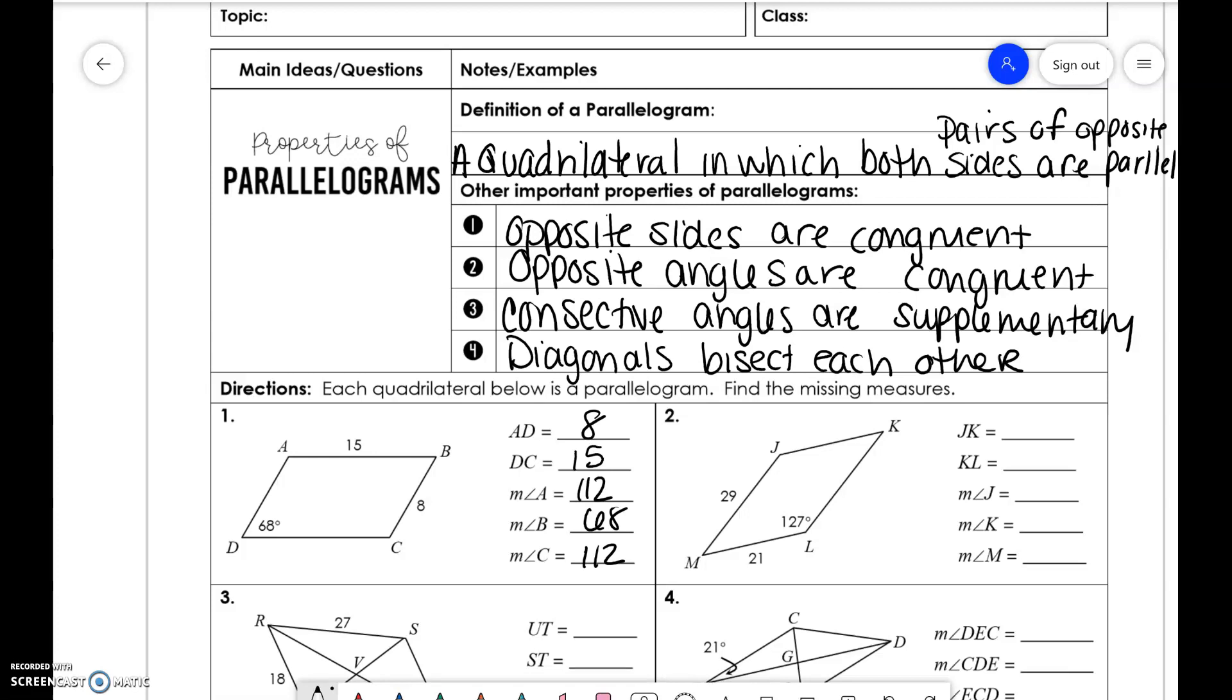Over here, JK is the same thing as ML. KL is 29. J is 127. It is the same thing as L. And if we do 180 minus 127, we get 53, which is the same thing as M.